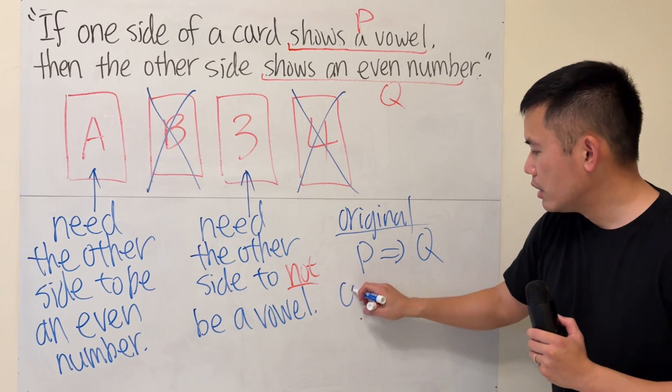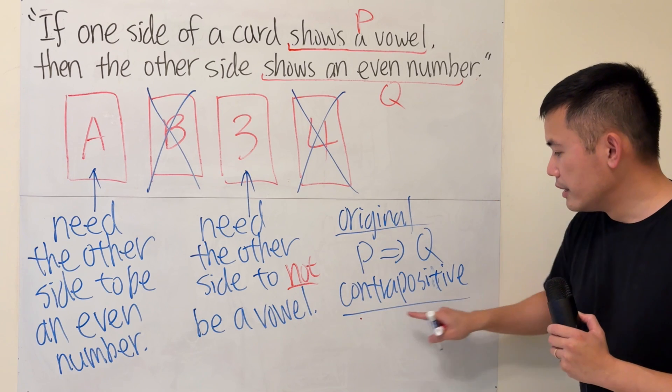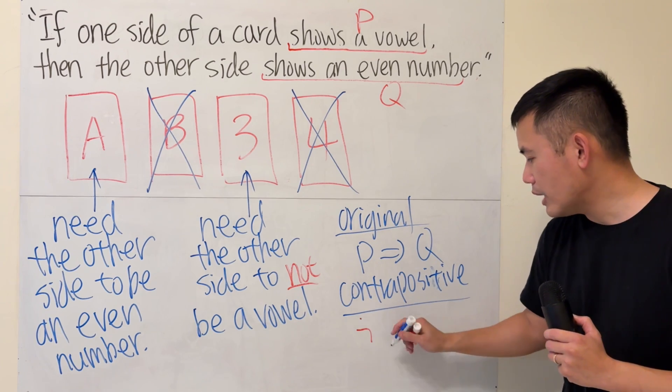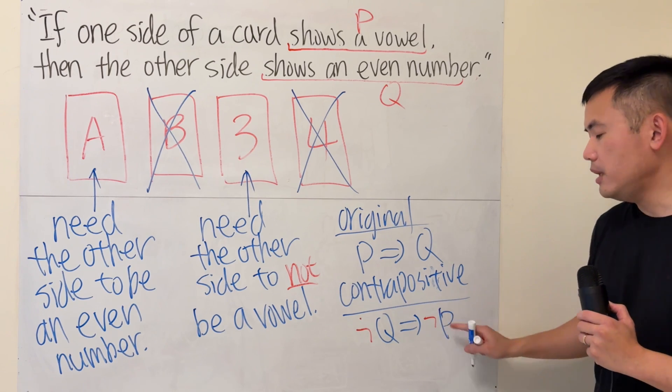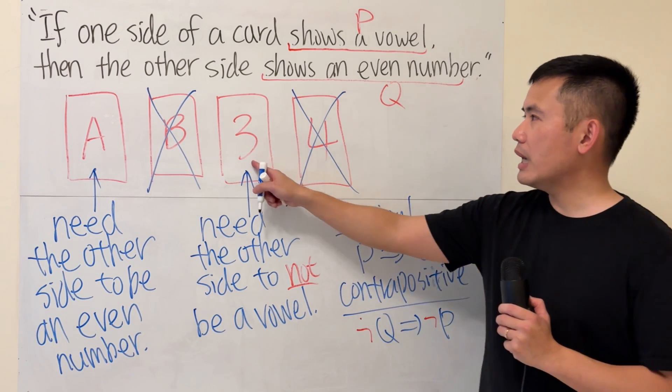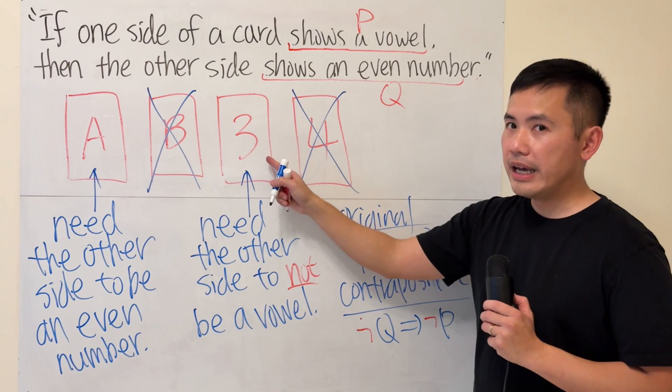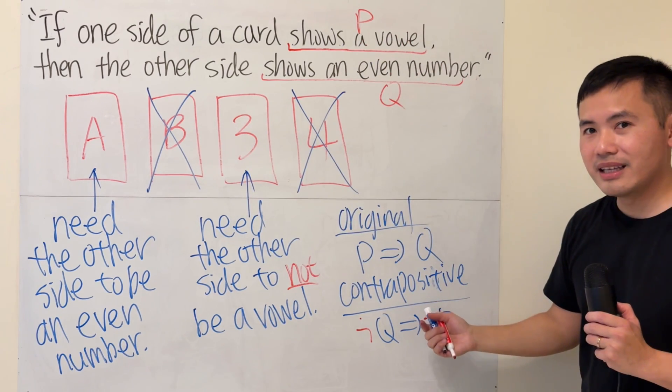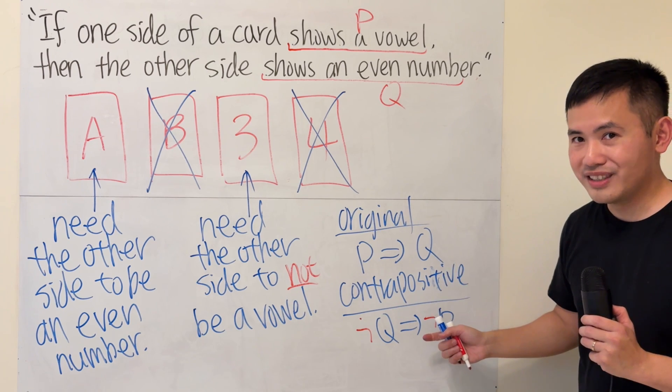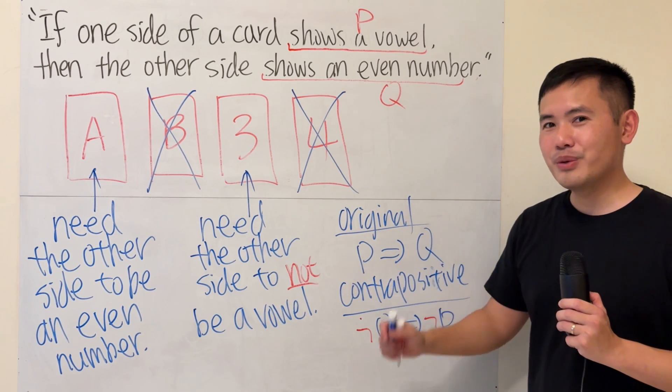Well, the contrapositive idea, this right here is that if we don't have Q, then we must not have P. So right here, we don't have the condition Q, then we have to check the other side to not be a vowel, just like that. And these two are logically equivalent, and that's a logic question.